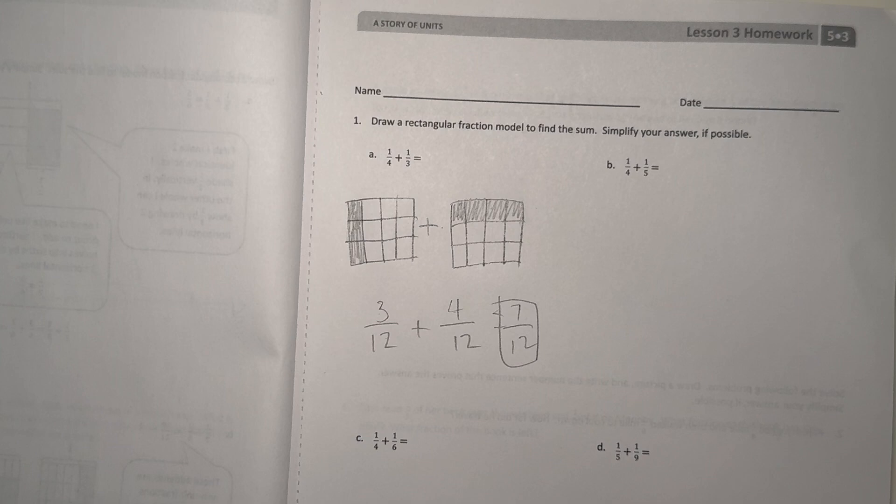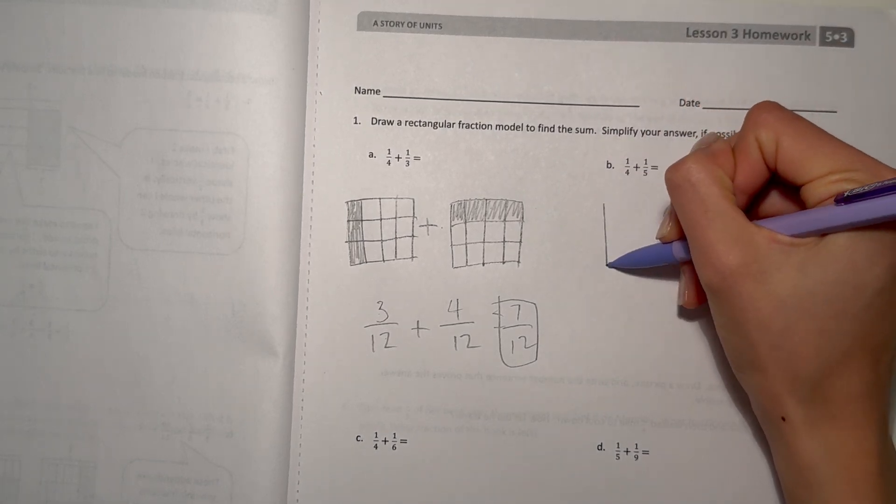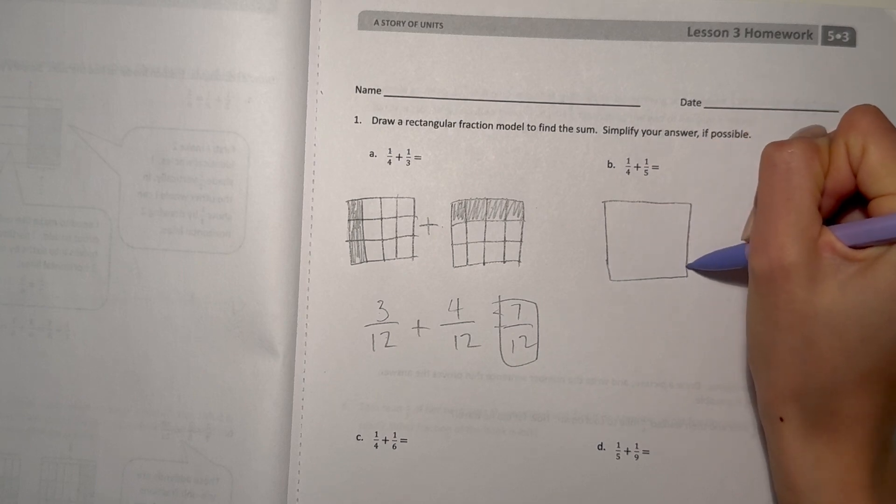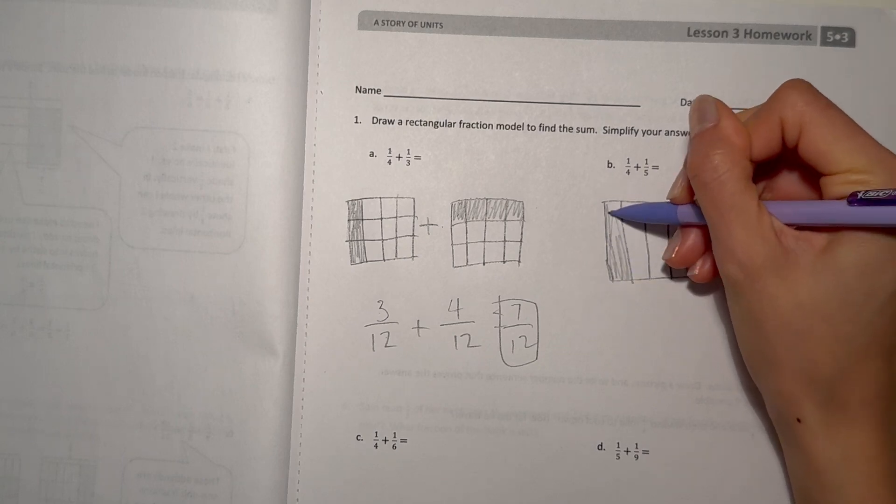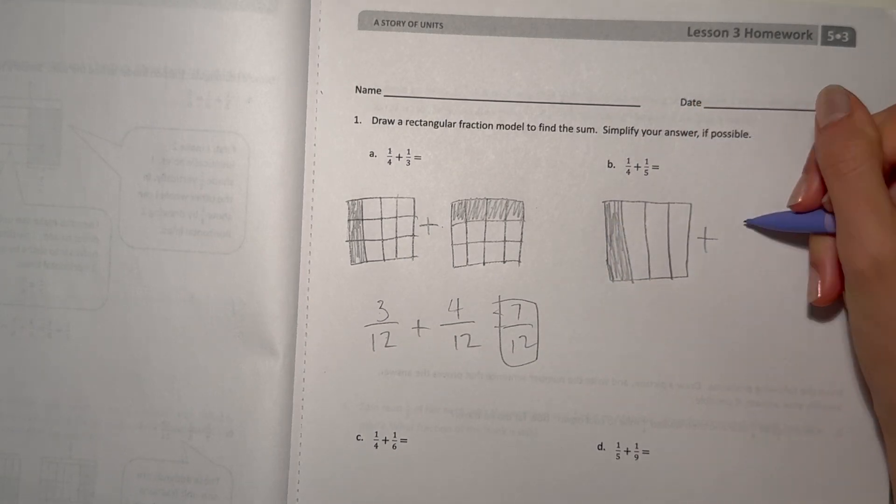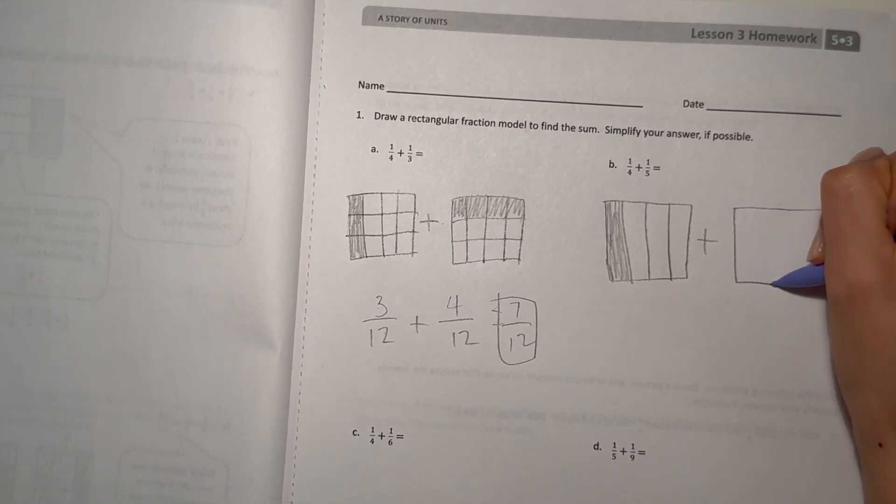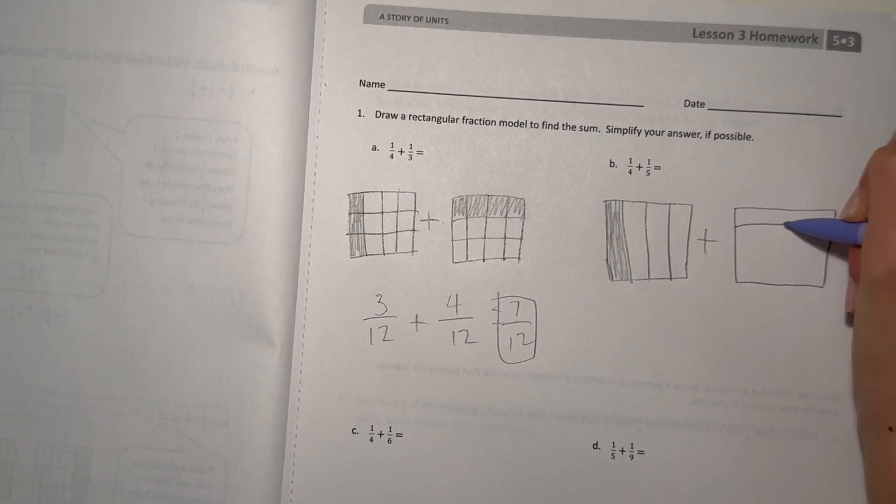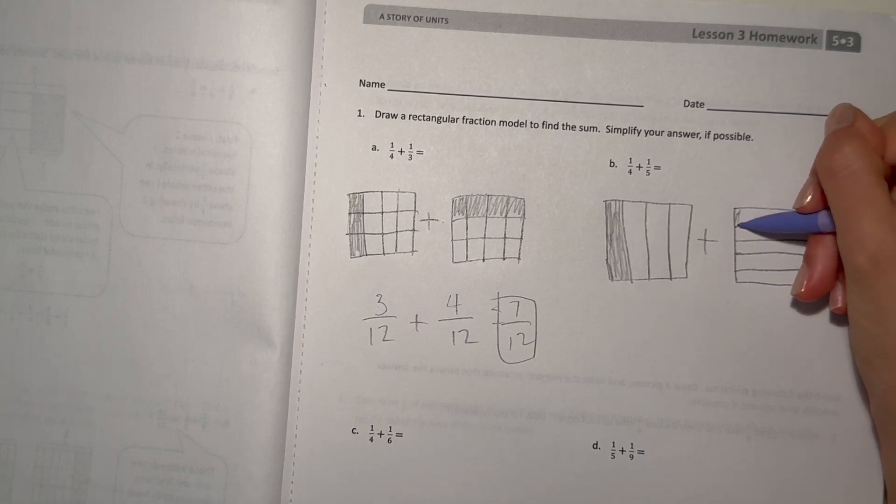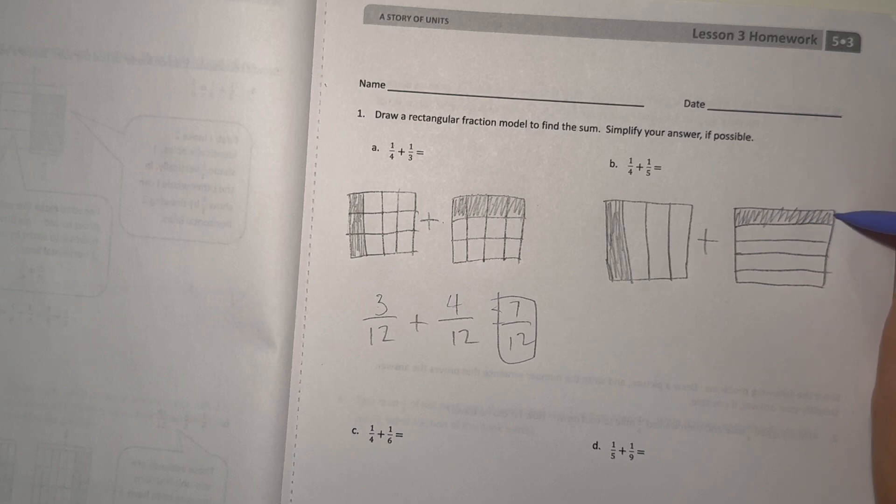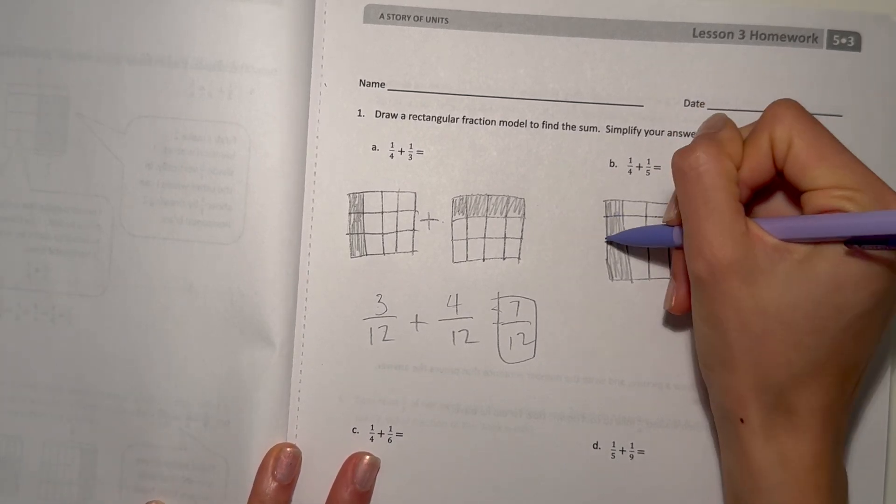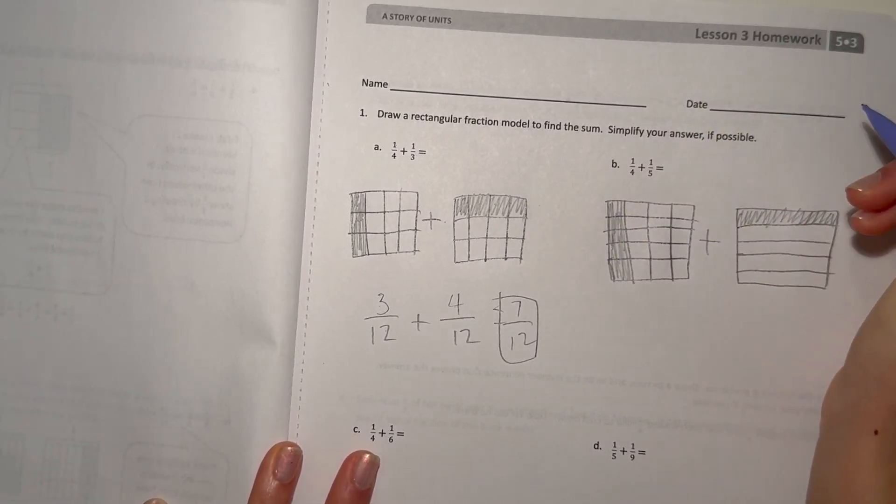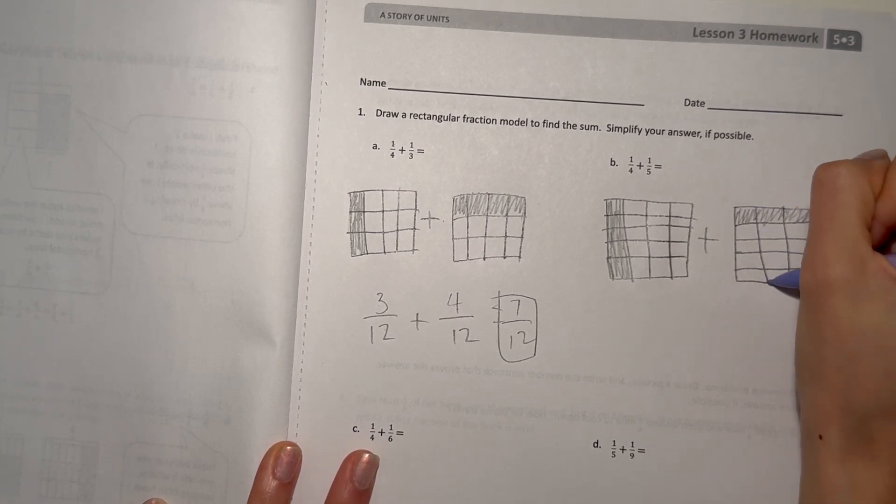Alright, now B, one-fourth plus one-fifth. Alright. So, fourth, one-fourth plus a fifth. Okay, so one-fifth. So, now we look at the fourths, and we draw five more sections. Like, one, two, three, four.